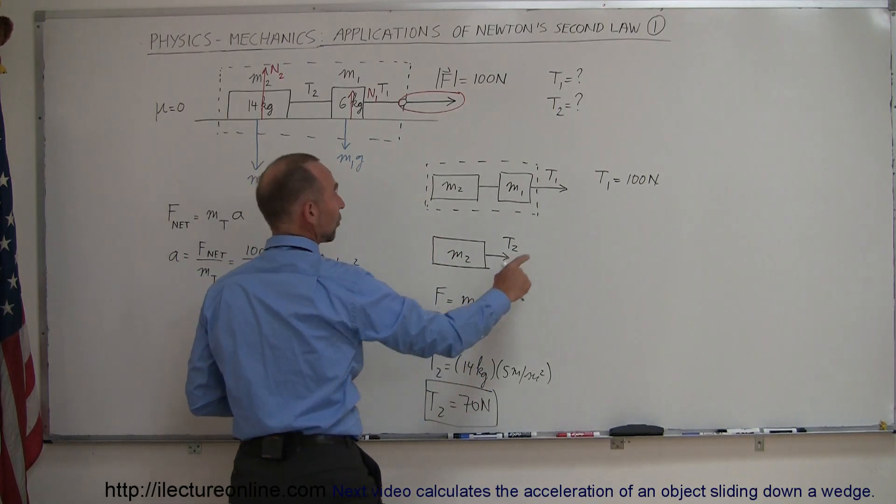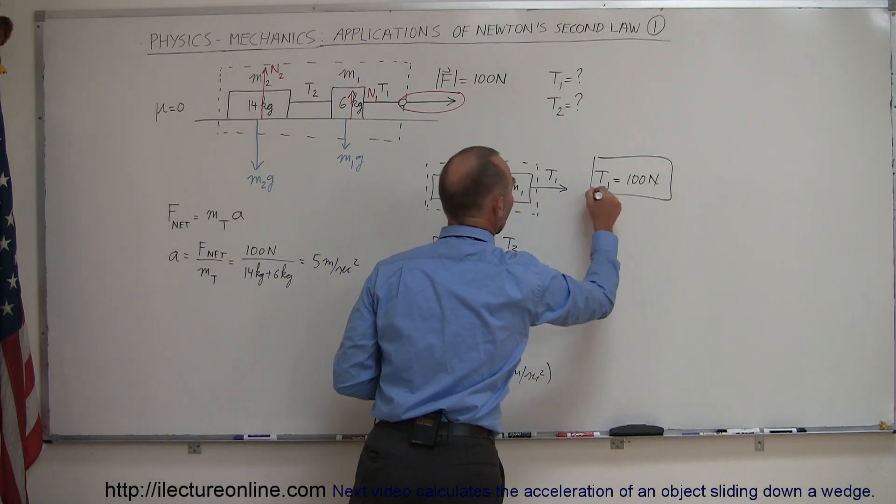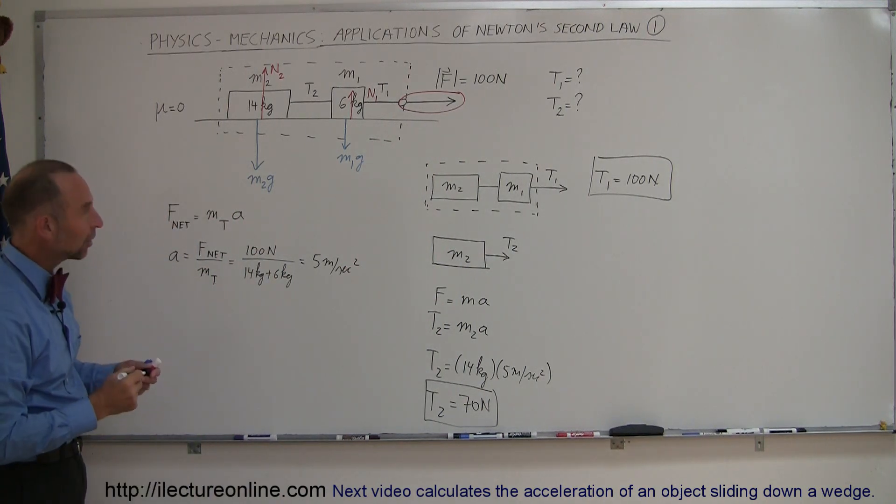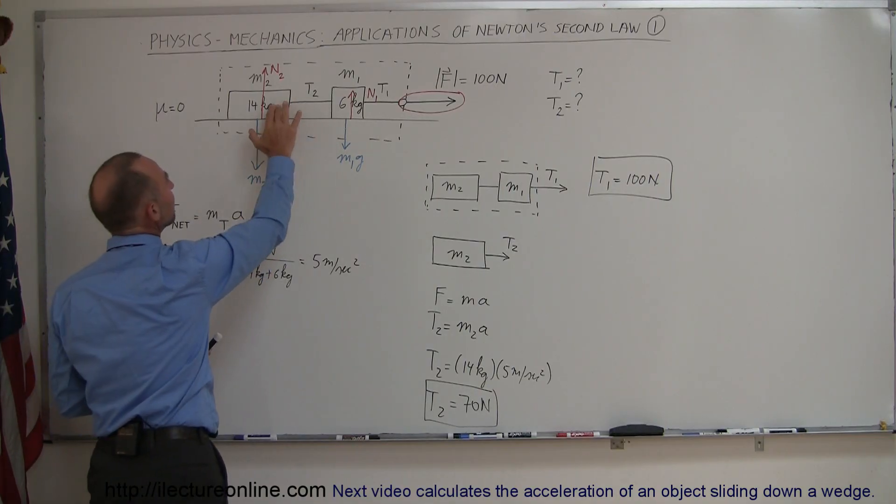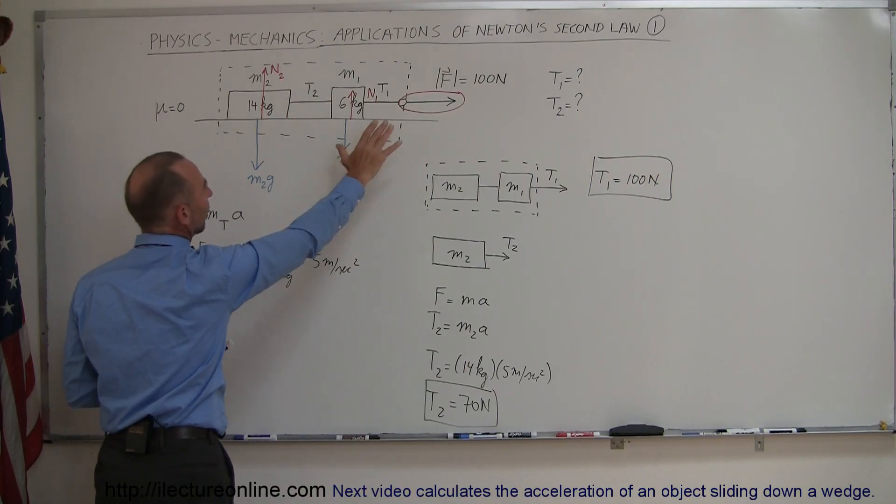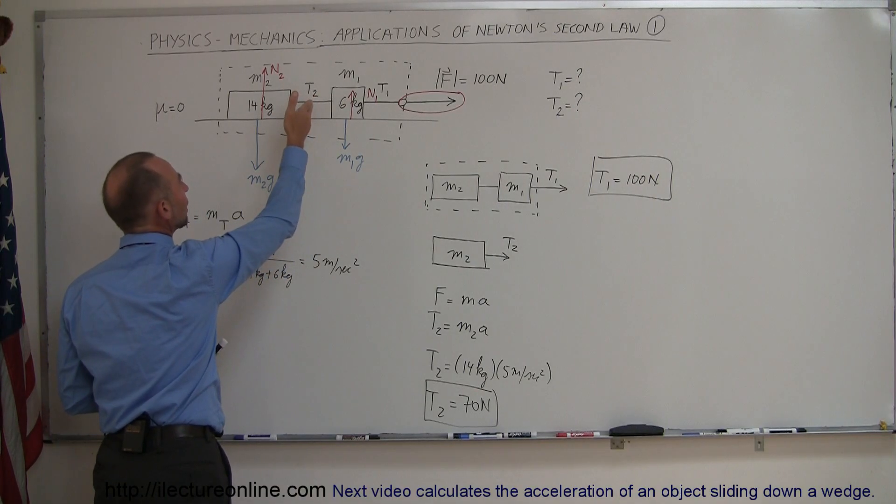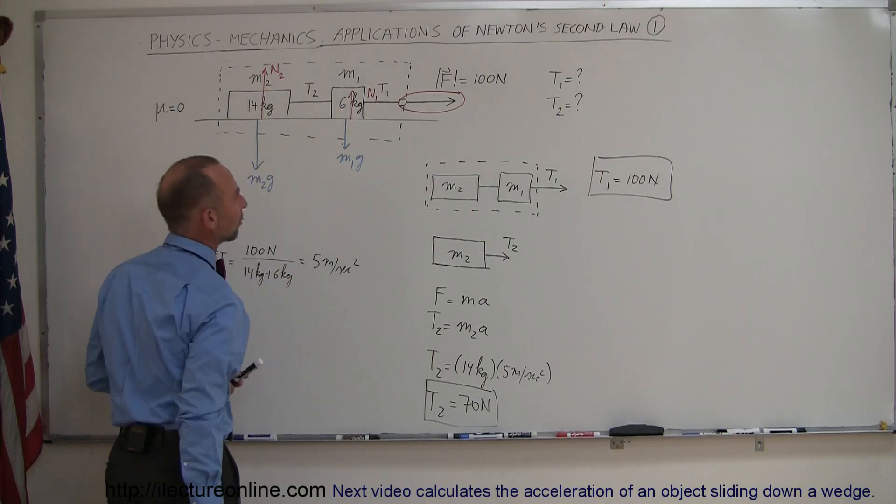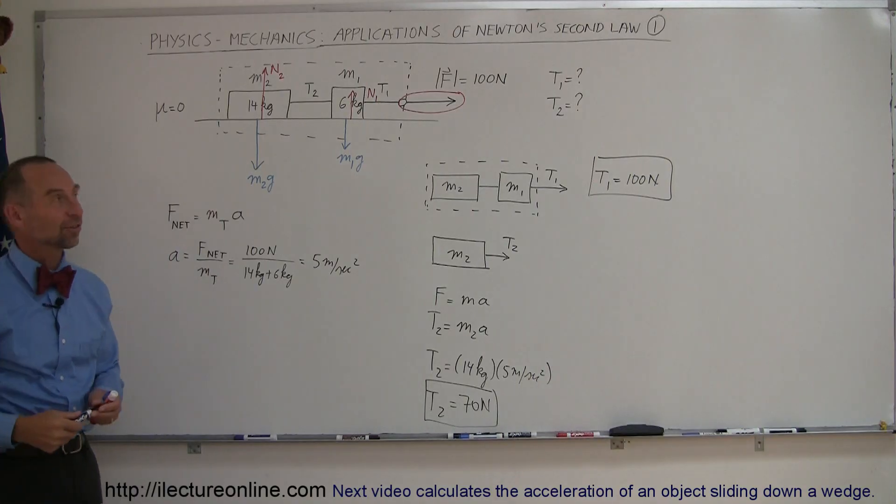We have the tension in the first string being 100 Newtons, and the tension in the second string being 70 Newtons. That's a really good classic example to show that the tension between masses like this of a system being accelerated, the tension only applies to the mass that comes after it, not the mass that comes before it. And there's example number one. Thank you.